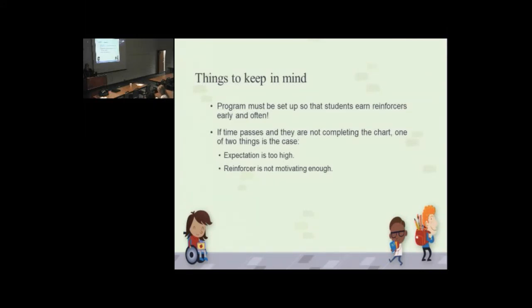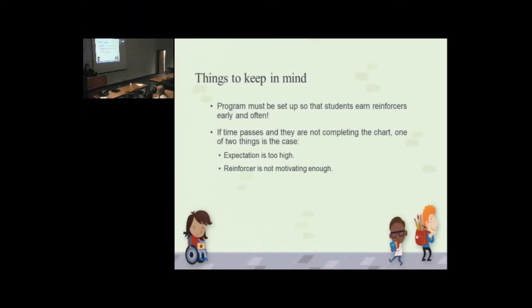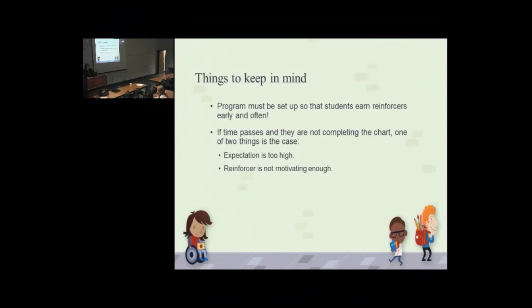So a couple things happen. If time passes, and the time varies depending on age, but if time passes and kids are not completing their dot-to-dot or they're not earning their reinforcer or they're not receiving that certain percentage that we've targeted of smiley faces, one of two things is happening or both. Either our expectation is too high or the reinforcer is not motivating enough, or both. So we need to look at it quickly and revamp it. And it's always easier to make the goal more stringent, but it's really hard to back it up.